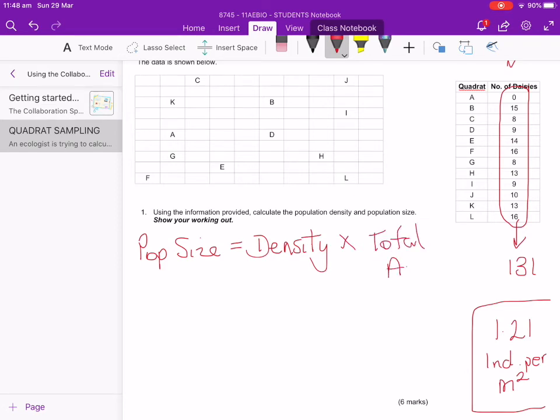So we make the assumption that the density that we've just calculated in the previous calculation is the same across the board. Now, we know that that's not the case, but this is just generally how we go about doing things. Remember, this is an estimate only. So our population size is going to be that density that we've just calculated multiplied by the total area.